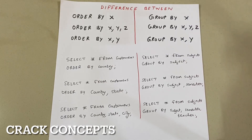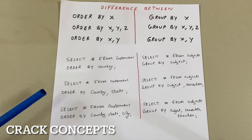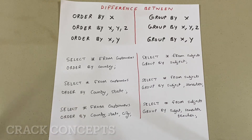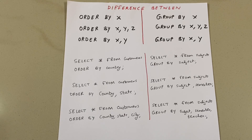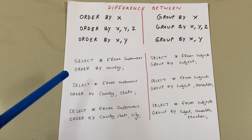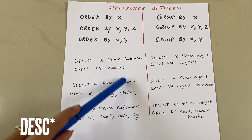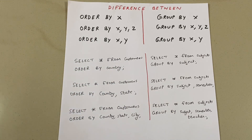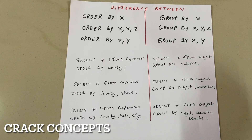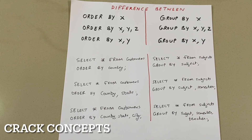First, let's understand what ORDER BY is. ORDER BY is used whenever you want to sort your output in either ascending order or descending order. By default it is sorted in ascending order, and if you write DESC it will be sorted in descending order.